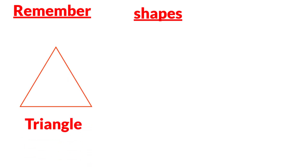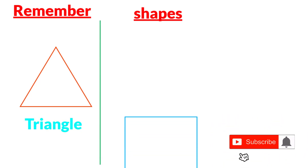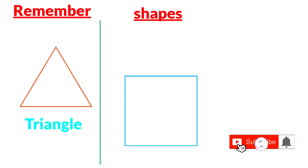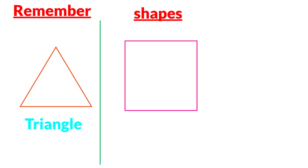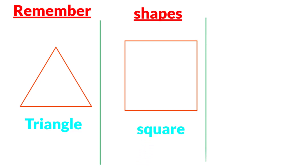What is the shape? Yes, it's triangle. The second shape guys is — yes — square. All sides are the same, all angles are the same, it's called square.